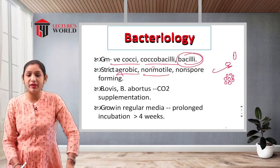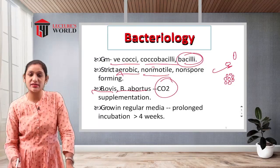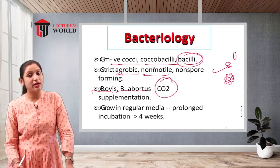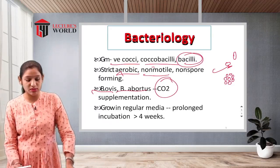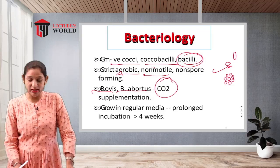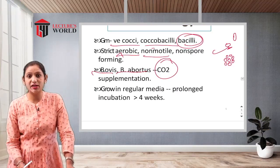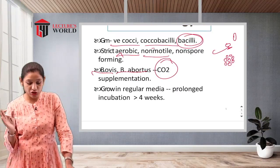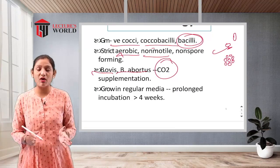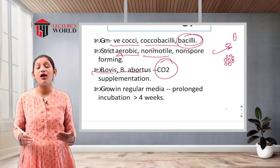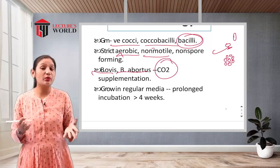B. ovis and B. abortus require CO2 supplementation, while all other species are aerobic. Brucella grows slowly in regular media and requires a prolonged incubation period of greater than four weeks for primary culture.